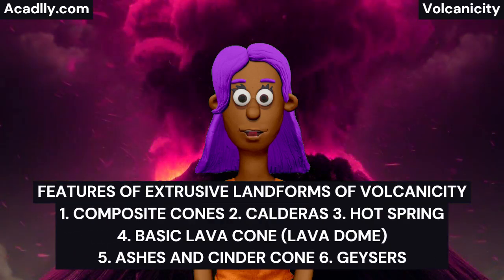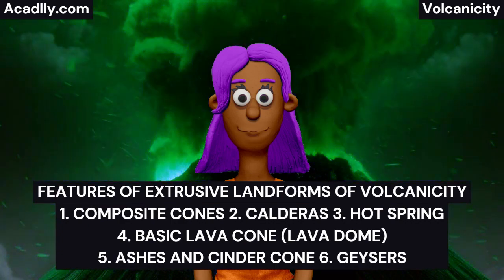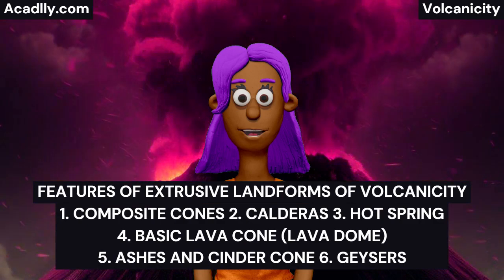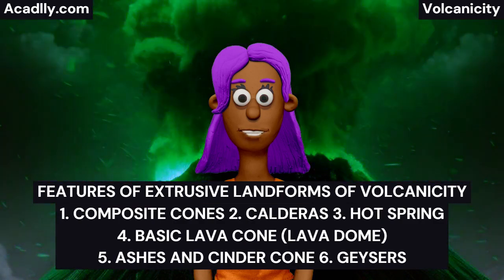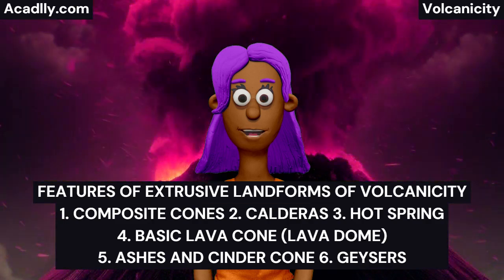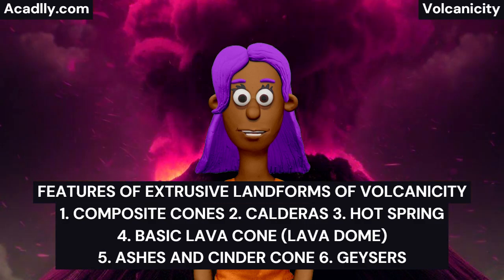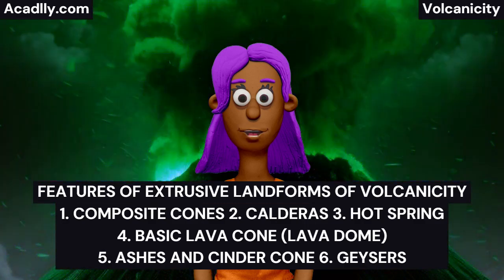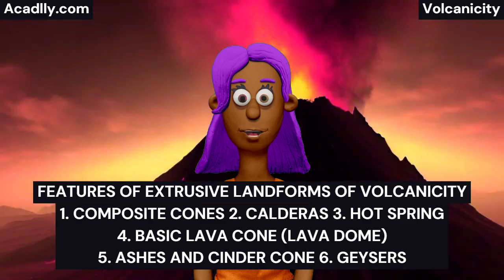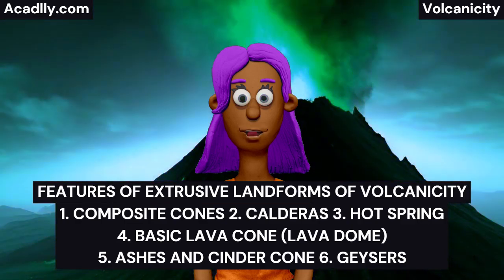Features of Extrusive Landforms — Composite Cones: Composite cones are also called stratovolcanoes. They have formed some of the grandest mountains of the earth. They are built of alternating layers of lava flows, volcanic ashes and cinders through several vents and parasitic cones. Volcanoes begin eruption with a great explosion and extremely viscous acid lava, domes or plugs. The magma contains volumes of dissolved gases such as water vapor, carbon monoxide, carbon dioxide, and hydrogen sulfate.